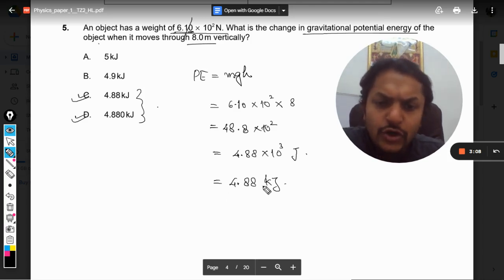So our answer should be rounded off to two significant figures. When we round it off to two significant figures, it will become 4.9 kilojoules.